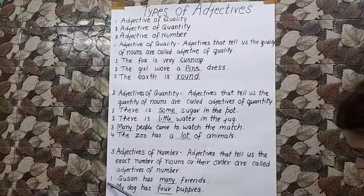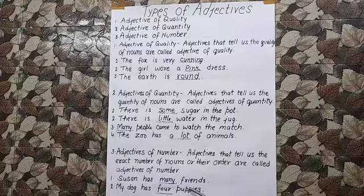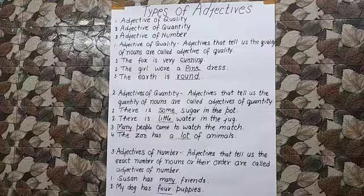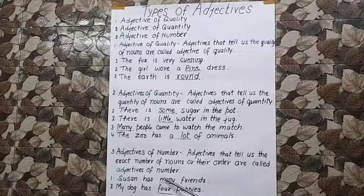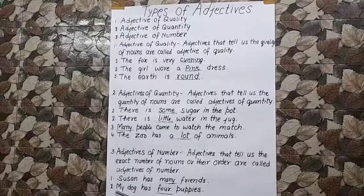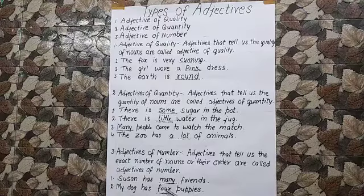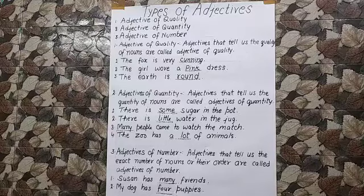Let us see some more examples, children. Susan has many friends. Since we can count our friends, many is an adjective of number here. My dog has four puppies. Since we can count the number of puppies, four is an adjective of number in this sentence.